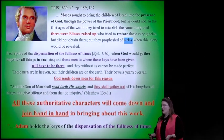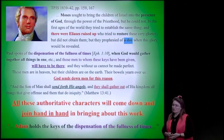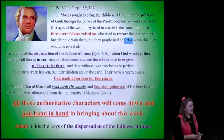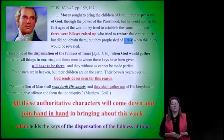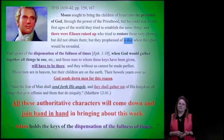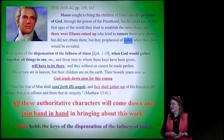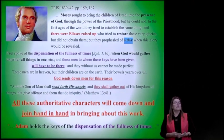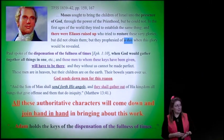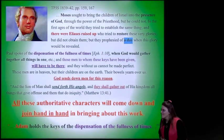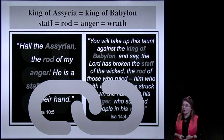All these authoritative characters will come down and join hand in hand in bringing about this work—and that would include Joseph Smith, because as he rode away from Nauvoo, he kept turning back because he wanted to see the completion of the temple and knew that he would not. He, as much or more than any of the other prophets, yearned to see Zion established. And that is future. There will be a grand symphony of prophets and angelic players on the scene for that grand finale.